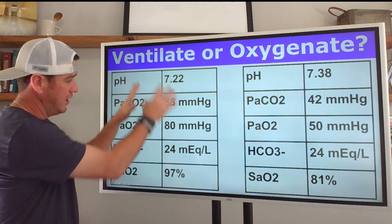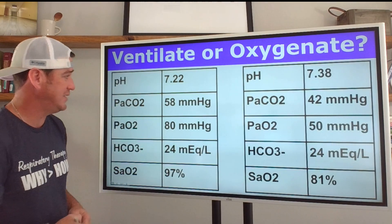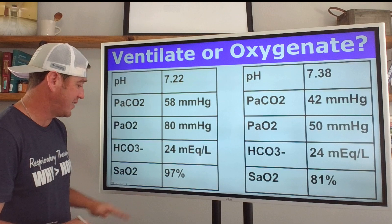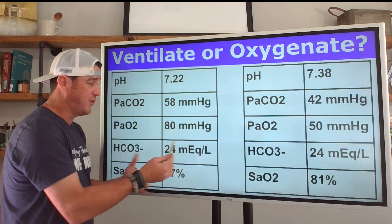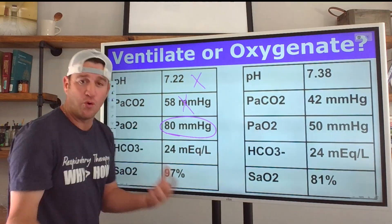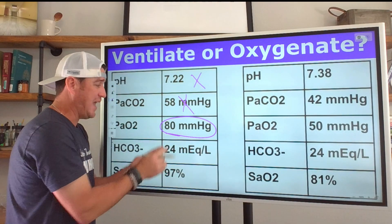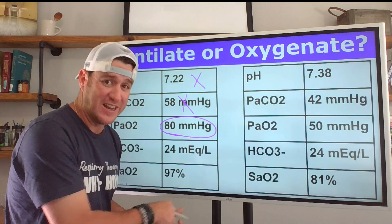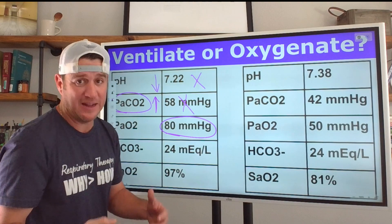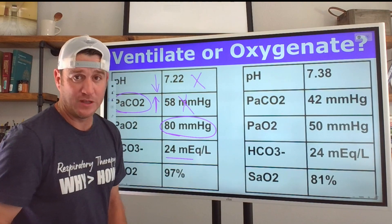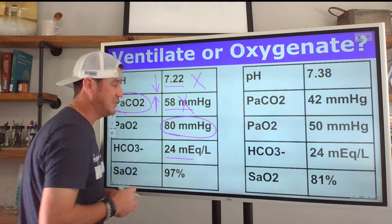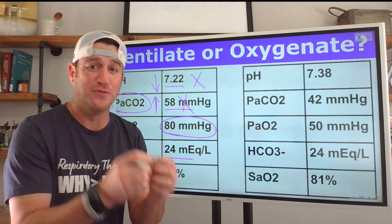Let's look at this blood gas. We have a pH of 7.22, a CO2 of 58 mmHg, a PaO2 of 80 mmHg, a normal bicarb, and a saturation of 97%. Right off the bat, the low pH and high CO2 are problems, while the PaO2 and oxygenation are normal. That elevated CO2 is causing the decreased pH with a normal bicarb — so we have a ventilation problem. Because the problem lies here causing an acidosis, we need to ventilate this patient.